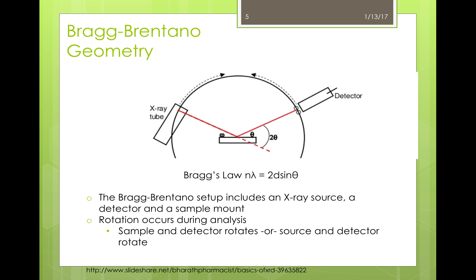However, the rotation of the source and the detector is very demanding on the machine, which is why some machines have a rotating sample plate. The angle that forms between the source of the X-rays and the sample on the XRD machine is omega, and the angle between the detector and the incident beam from the X-ray source is consistently at 2-theta, meaning that it's always double the omega angle.